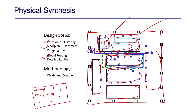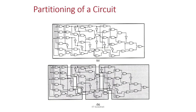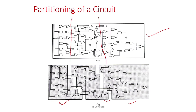The first step is divide and conquer — you partition your design into components. For example, given a design you decide to cut at certain places, creating three partitions. Your objective when partitioning is to make sure the number of wire crossings from one block to another is minimum, because once you physically place the blocks, these connections must be made physically.